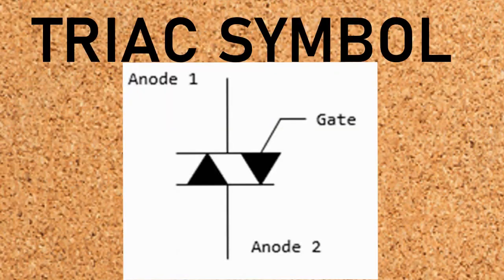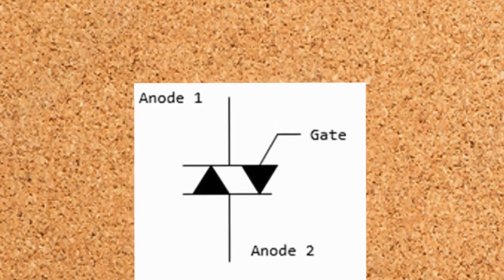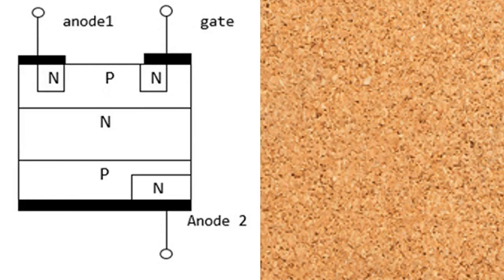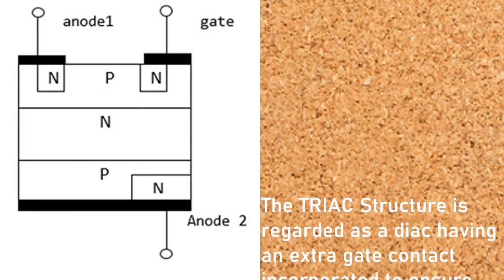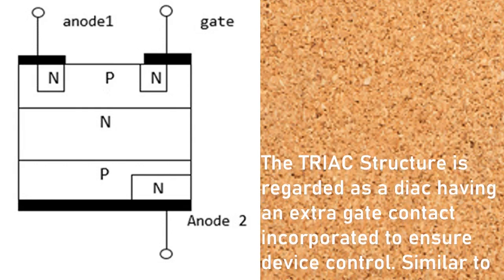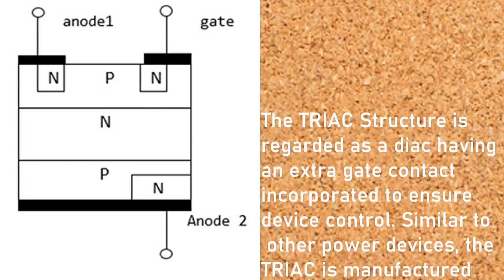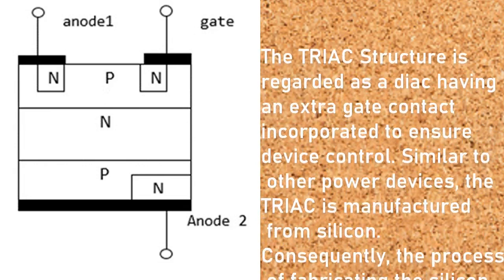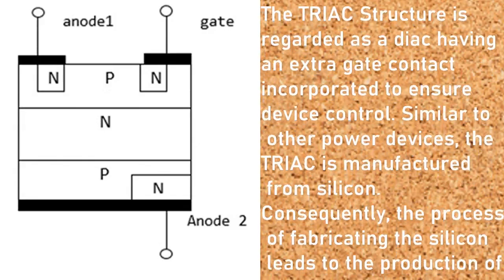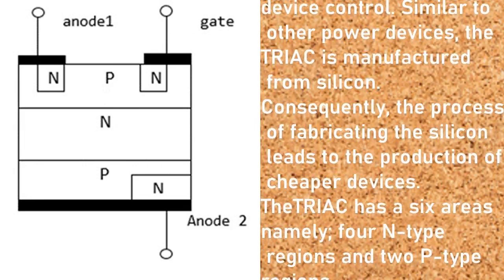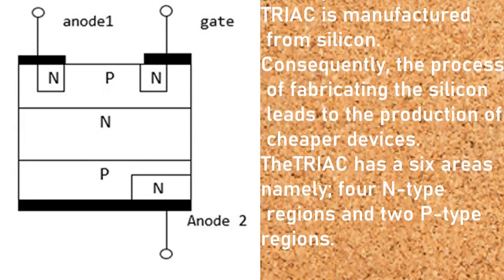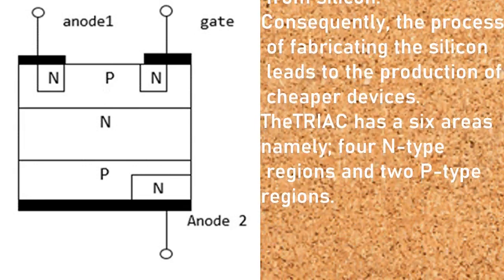TRIAC symbol. This is the circuit diagram for a TRIAC. It resembles two thyristors placed back-to-back. TRIAC structure: the TRIAC structure is regarded as a diac having an extra gate contact incorporated to ensure device control. Similar to other power devices, the TRIAC is manufactured from silicon. Consequently, the process of fabricating the silicon leads to the production of cheaper devices. The TRIAC has six areas: four N-type regions and two P-type regions.